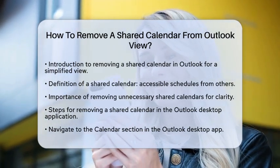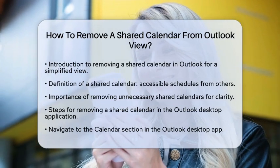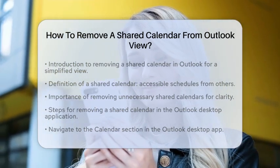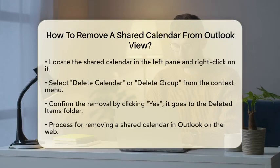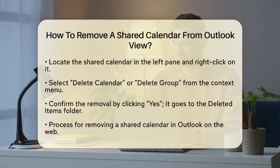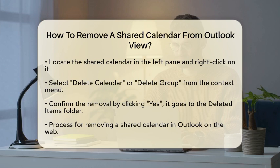If you are using the Outlook desktop application, start by opening Outlook and navigating to the Calendar section. In the left pane, you will see a list of calendars. Locate the shared calendar you wish to remove and right-click on its name. You will see a context menu pop up. From there, select Delete Calendar or Delete Group, depending on how the calendar is categorized. Outlook will then prompt you to confirm the removal. Click Yes.